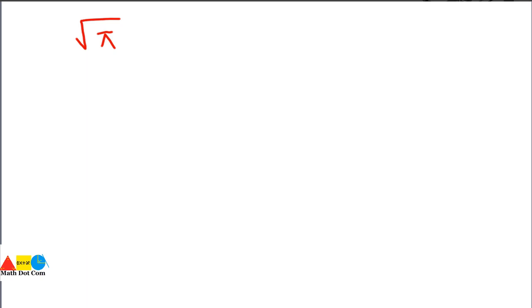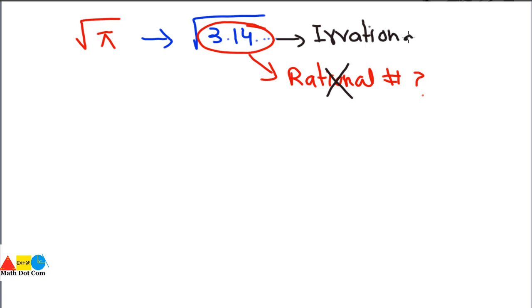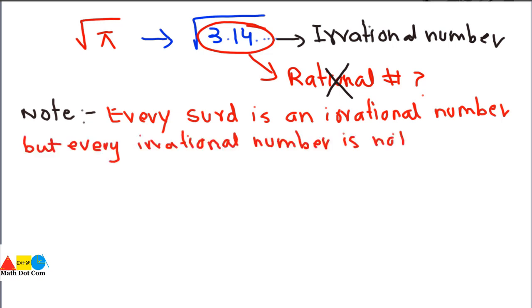Now let's take a different example. If you are given square root of π, you are asked to check whether it is a surd or not. The value of π is 3.14 and so on — it is not a definite value. For a surd, you have to check whether the radicand is rational or not. Is π a rational number? No, π is not a rational number; it is an irrational number. Therefore, square root of π is not a surd, because for a surd the radicand must be a rational number.